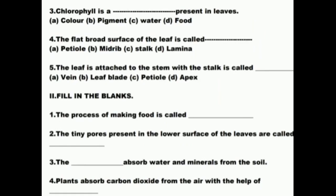Fill in the blanks. Question 1: The process of making food is called — answer: photosynthesis. Question 2: The tiny pores on the lower surface of the leaves are called — answer: stomata. Question 3: The dash absorb water and minerals from the soil — answer: roots. Question 4: Plants absorb carbon dioxide from the air with the help of — answer: stomata.